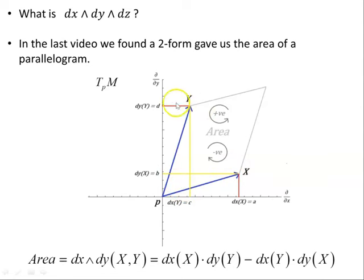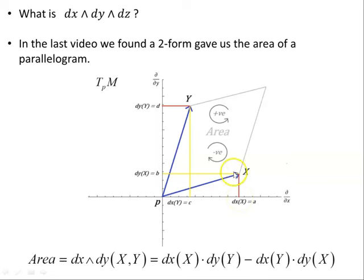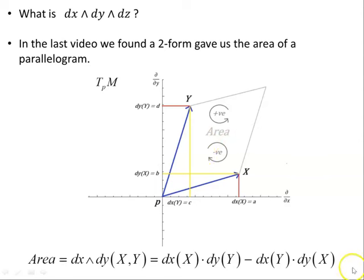Taking it from the x to y direction gave us a positive signed value of the area, but y to x gives you the negative value. Here's our tangent space of the manifold at point p, with basis vectors partial/partial x and partial/partial y. dx acting on vector x gave us the x component of x, and dy acting on vector y gave us the y component of y, allowing us to calculate the signed area. That's what we found in the last video.